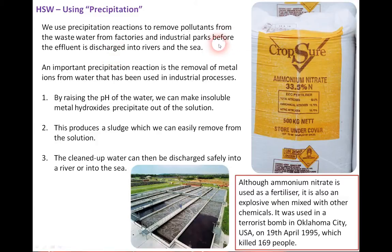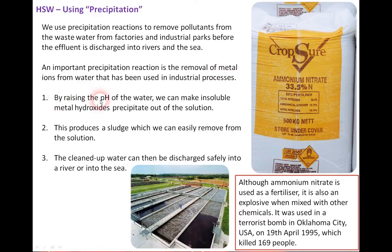We can cleverly use precipitation to remove pollutants from wastewater from factories before the effluent is discharged into rivers and seas. An important precipitation reaction is the removal of metal ions from industrially used water. By raising the pH of the water, insoluble metal hydroxides precipitate out of solution, dropping to the bottom as a sludge which is then removed, and the cleaned-up water is safely discharged.